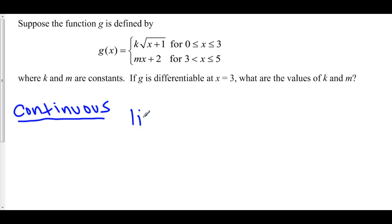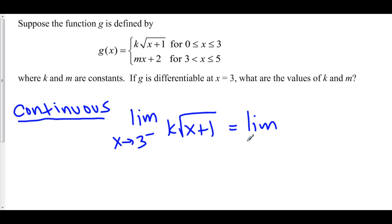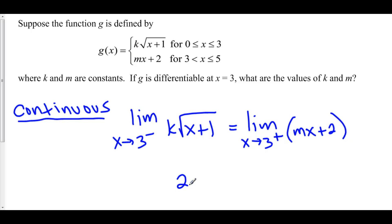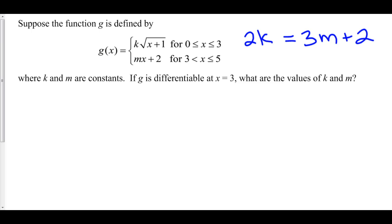Let's take a look at the continuity of g. We have the limit as x approaches 3 from the left-hand side of g of x, using the top function k times the square root of x plus 1, set equal to the limit as x approaches 3 from the right-hand side using the bottom function mx plus 2. Plugging in x equals 3: the square root of 3 plus 1 is the square root of 4, which is 2. So we get 2k equals 3m plus 2. From continuity, we have created this relation between k and m.